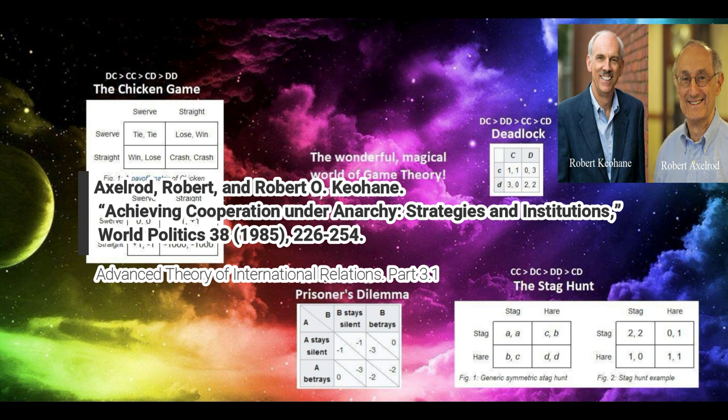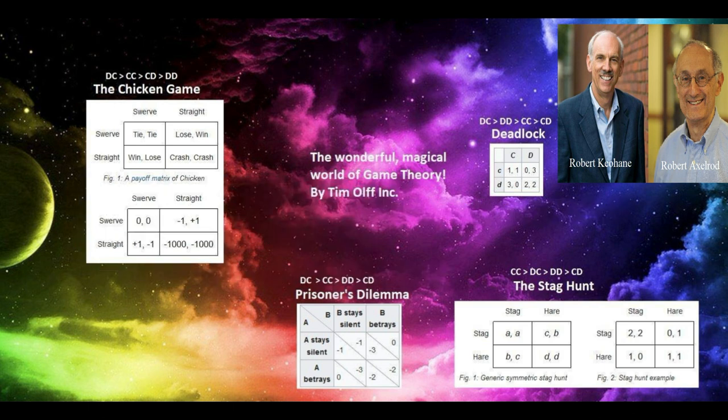Robert Axelrod is a professor of political science and public policy at the University of Michigan. He is best known for his interdisciplinary work on the evolution of cooperation. His current research interests include complexity theory, agent-based modeling, international security, and cyber security.